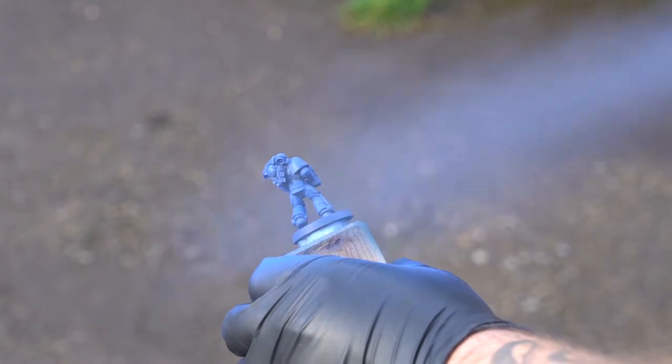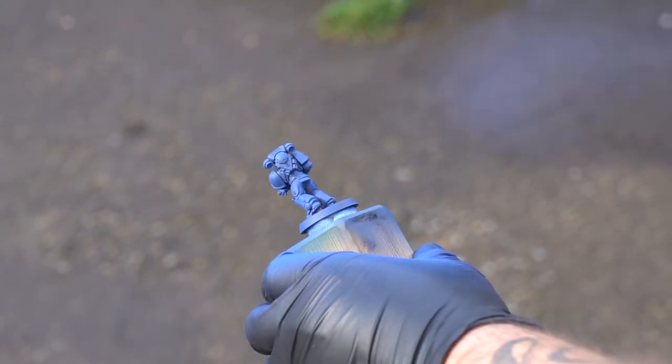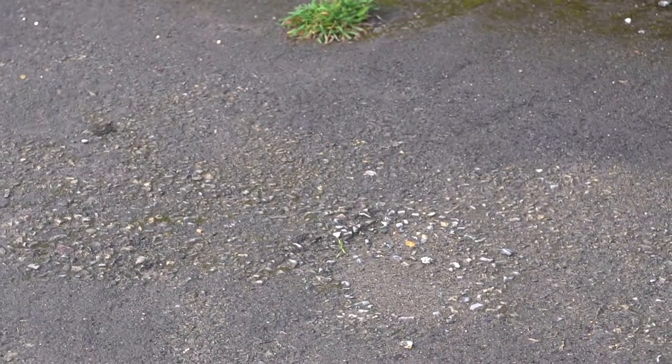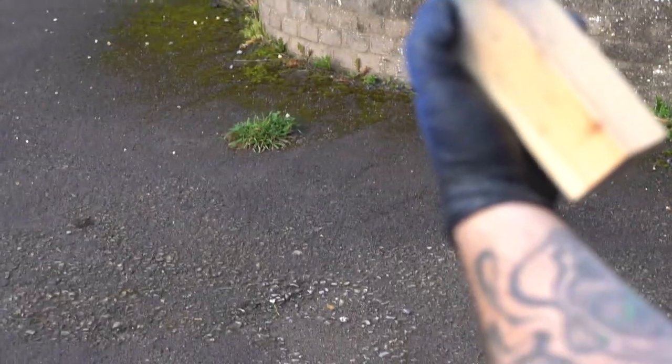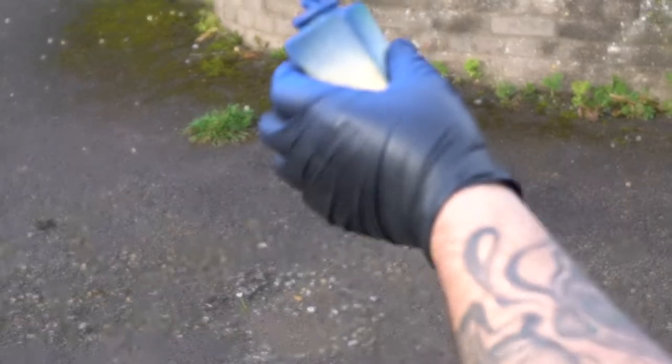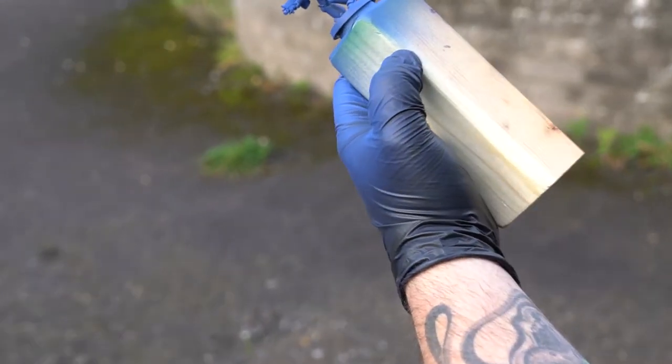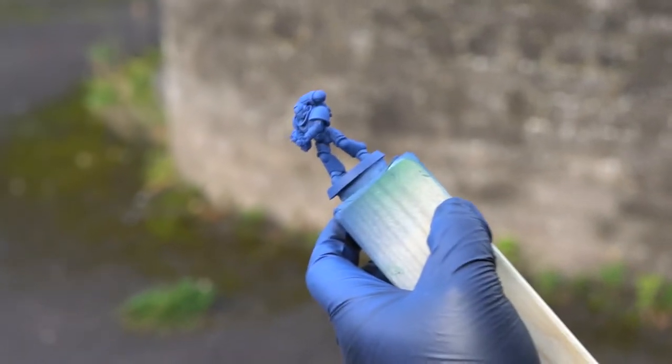It's always short bursts. Check the model, see what's happening, adjust how close the model is to the spray can depending on the weather. What you're looking at is really trying to get an even coat on the model. You just achieve that with short bursts and making sure that you're getting all the nooks and crannies instead of just holding the rattle can down.